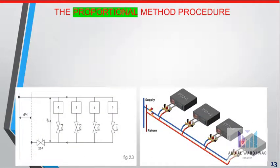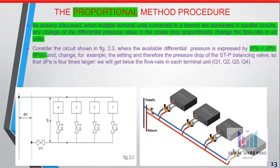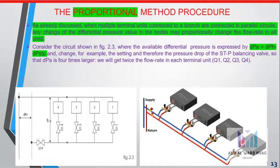The proportional method procedure: when multiple terminal units connected to a branch are connected in parallel circuits, any change of the differential pressure value in the nodes may proportionally change the flow rate in all units. Consider the circuit where the available differential pressure is expressed by DP_a = DP_h - DP_stp, and change the setting and therefore the pressure drop in the STP balancing valve.